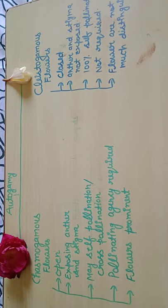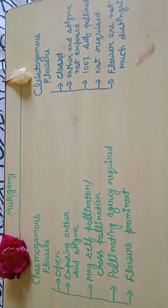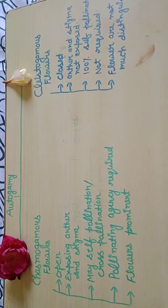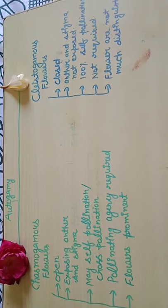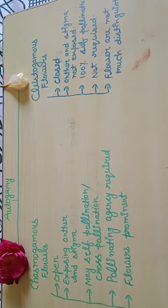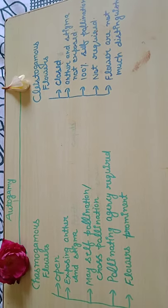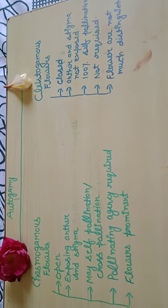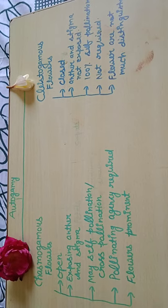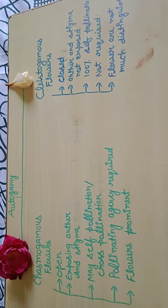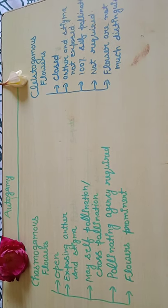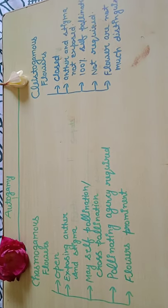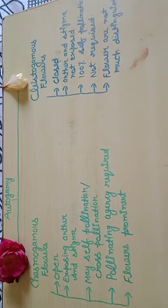Good morning students, welcome to my channel. Today I will tell you about autogamy. In my previous lecture I covered self-pollination. According to autogamy, there are two types of flowers.